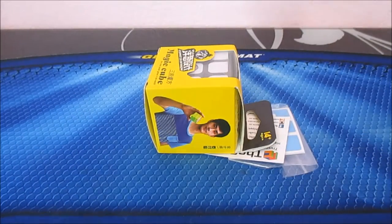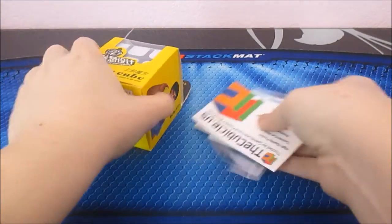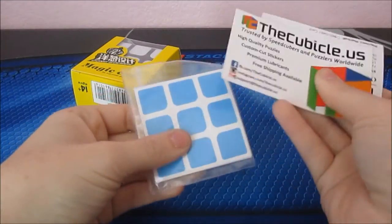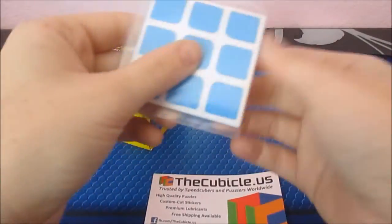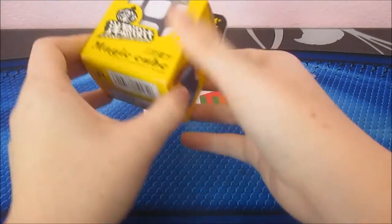So here we have the cube itself, the cubicle business card, as well as some stickers and the receipts. Let me get rid of that one real quick. So here we have the card, the stickers, and more importantly, the cube.